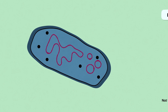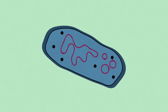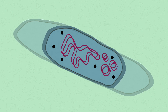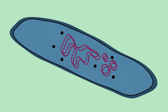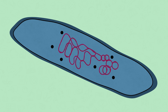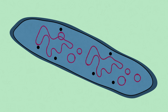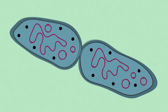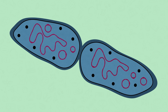During division, the chromosome and plasmids are replicated. The bacterium grows to get ready for division, and the copies of the chromosome and plasmids are pulled to each side of the cell. The cell membrane or wall, if present, and cytoplasm divide to form two new organisms.